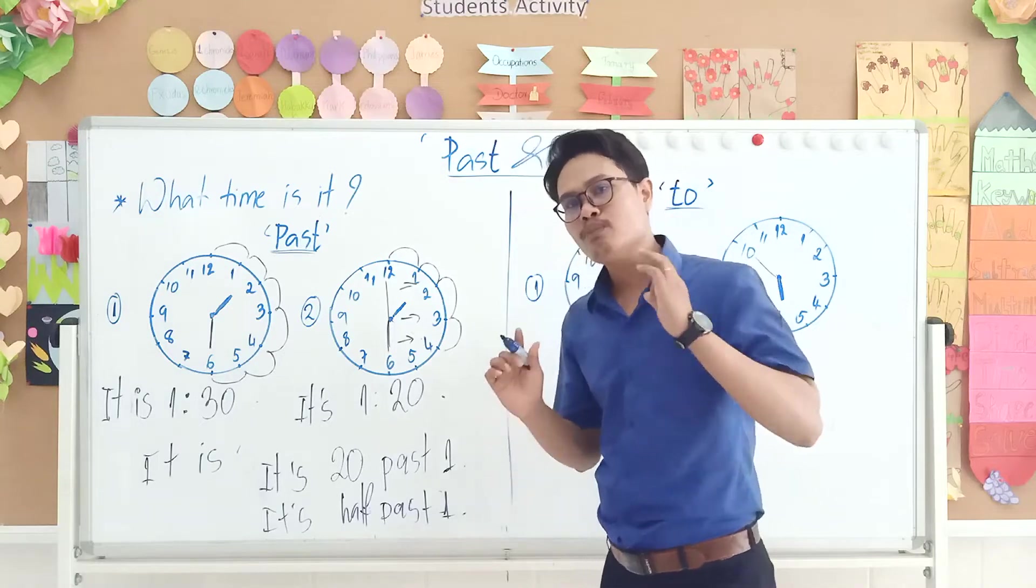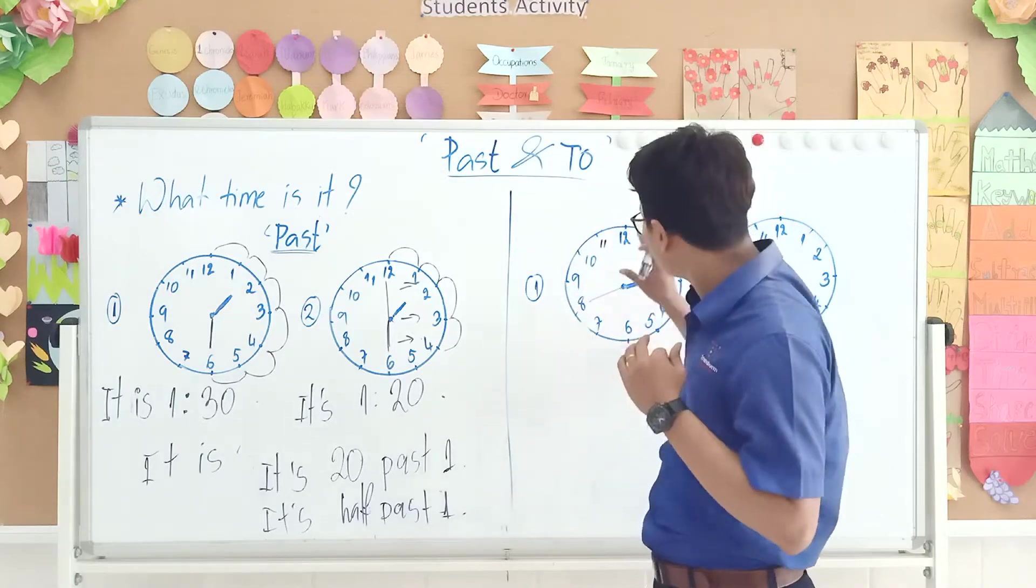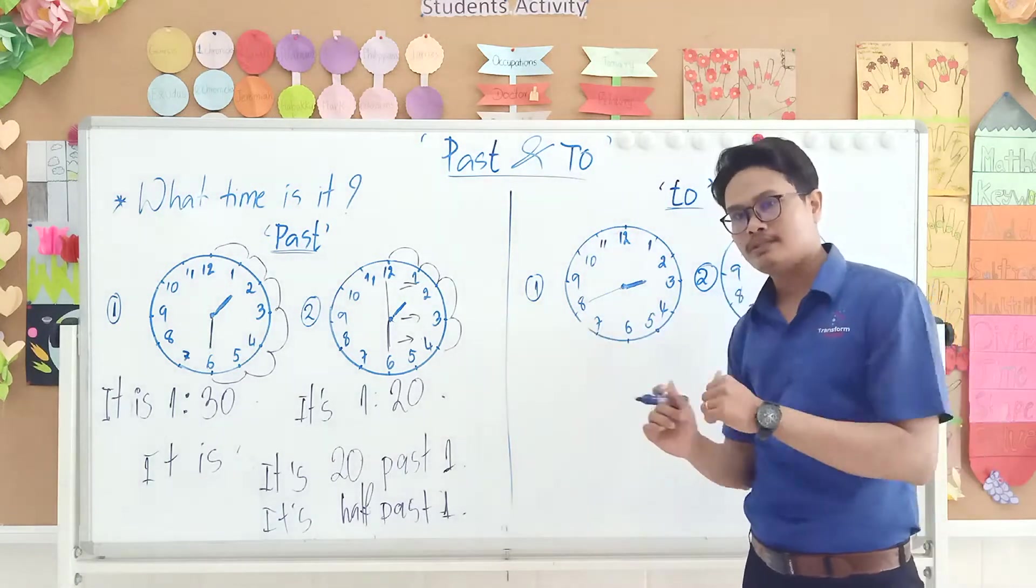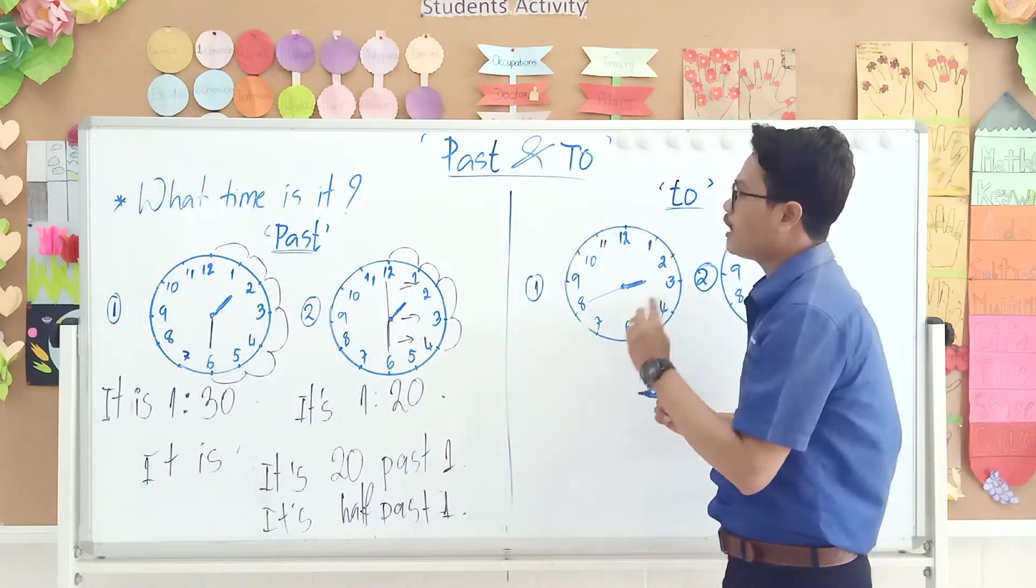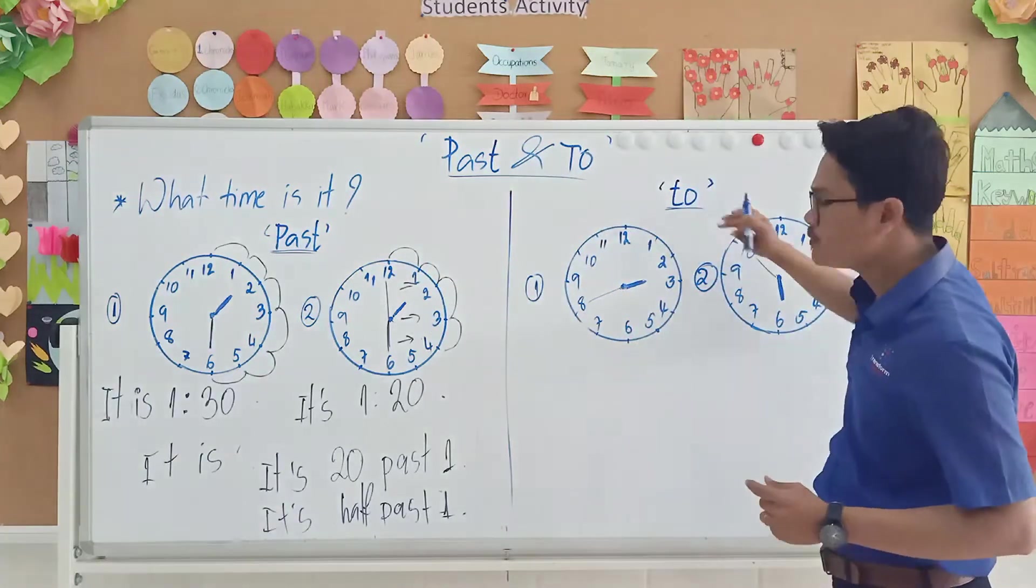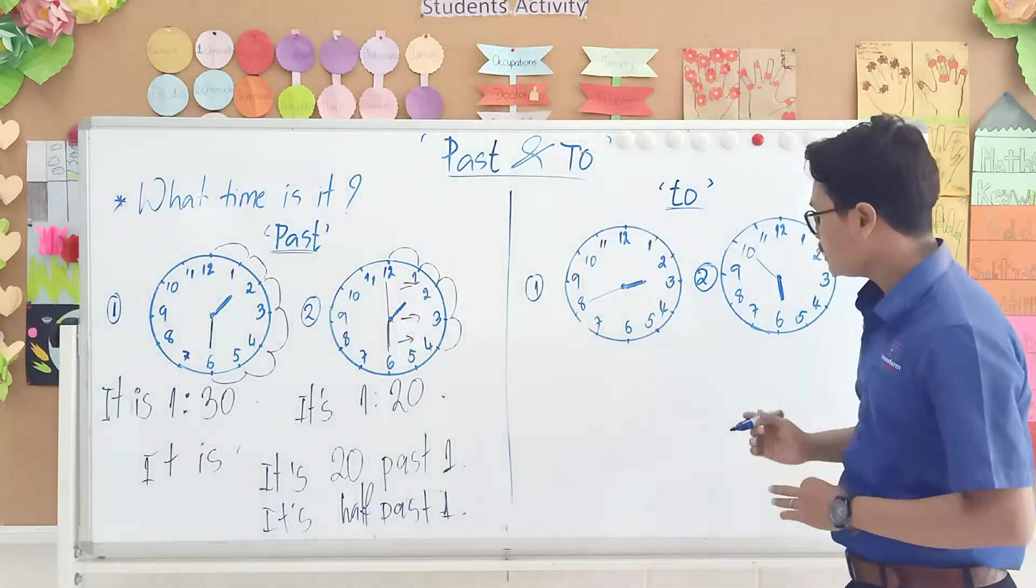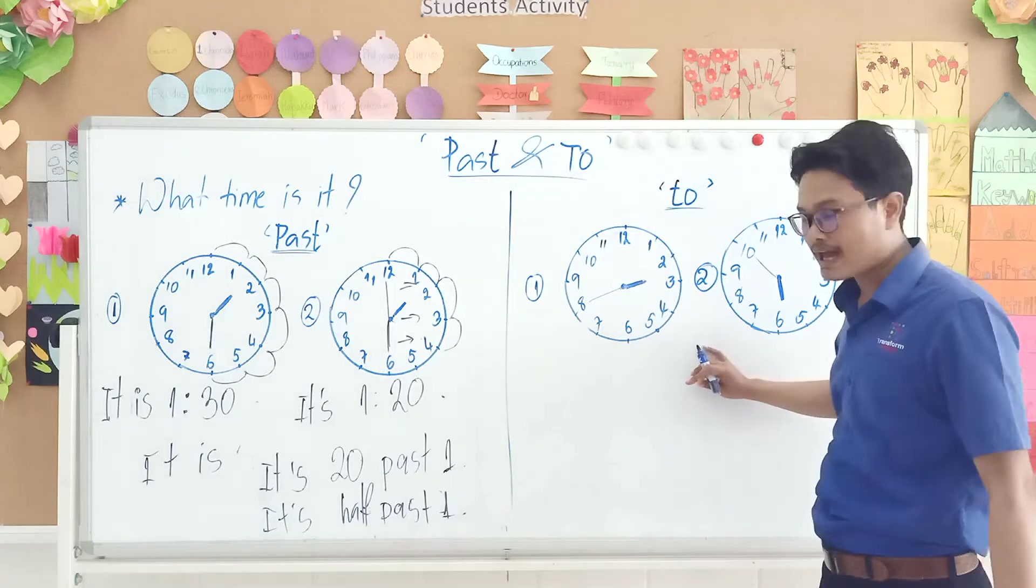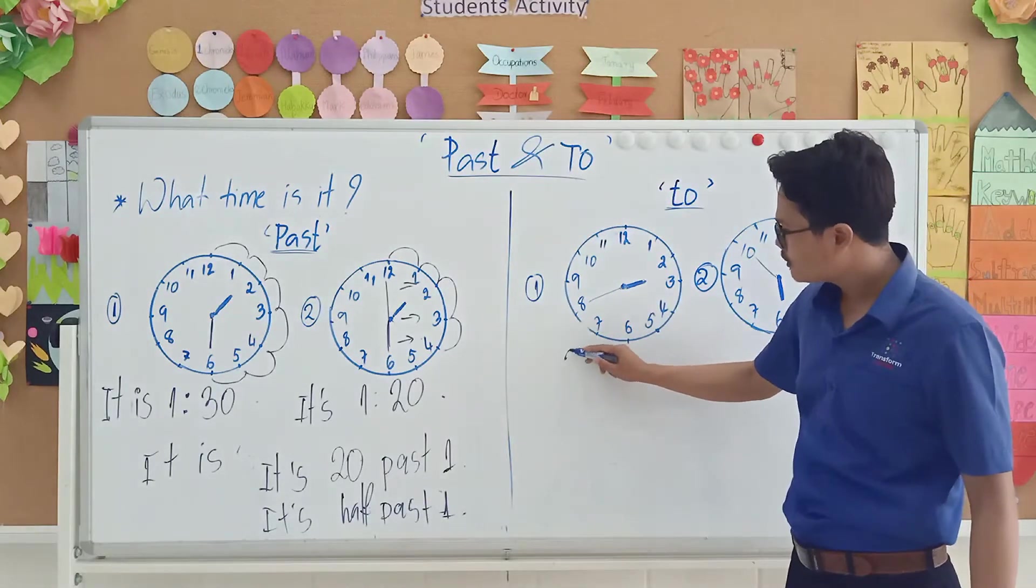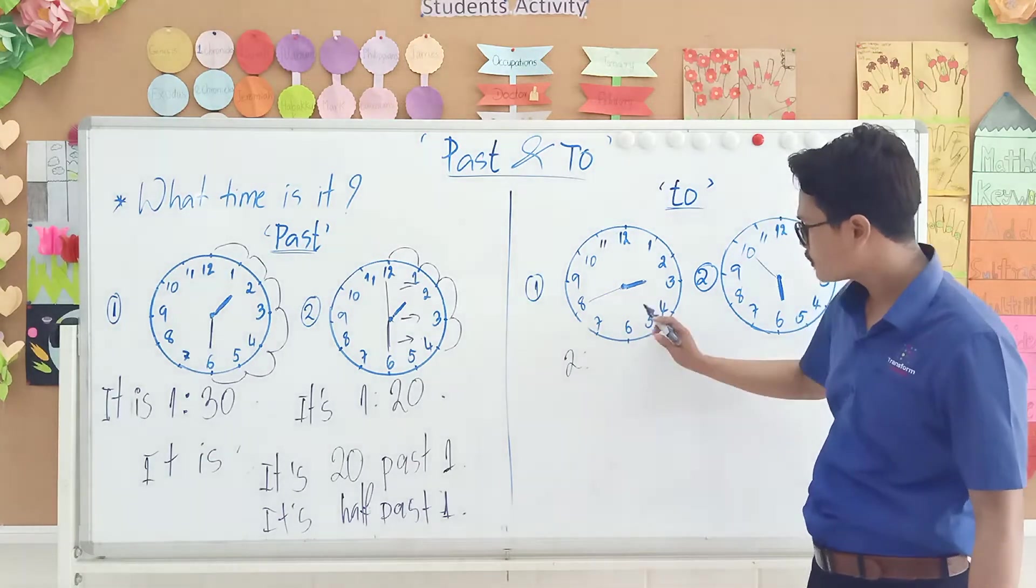So right now we move to 'to' all together. I hope that past, you understand me, how you tell me the time with the word past. So now with 'to'. Can you tell me what time is it right now? It is 2:40.